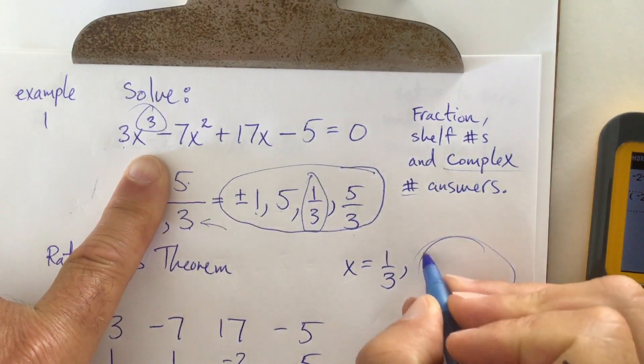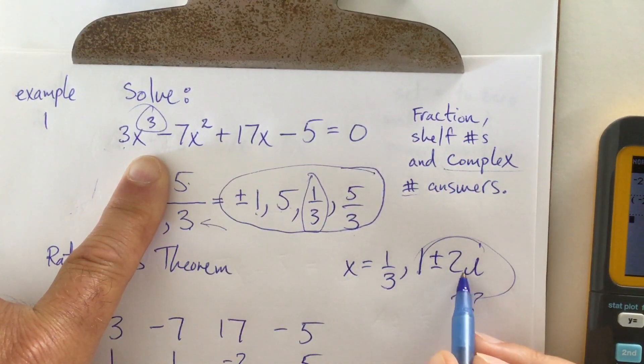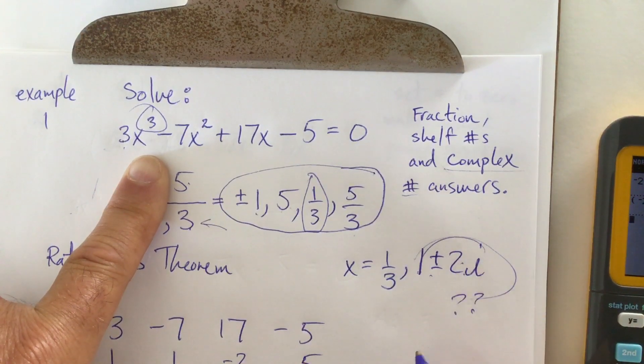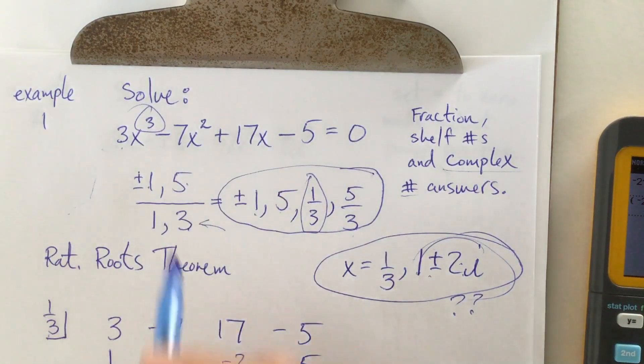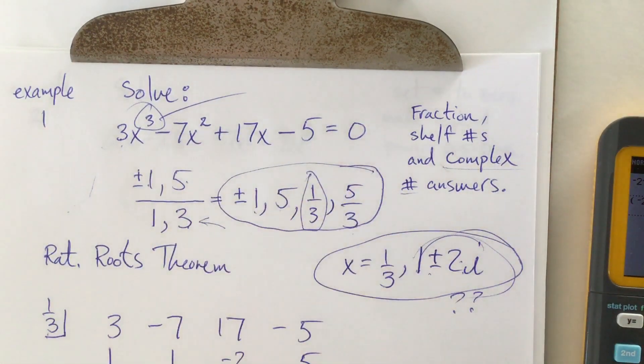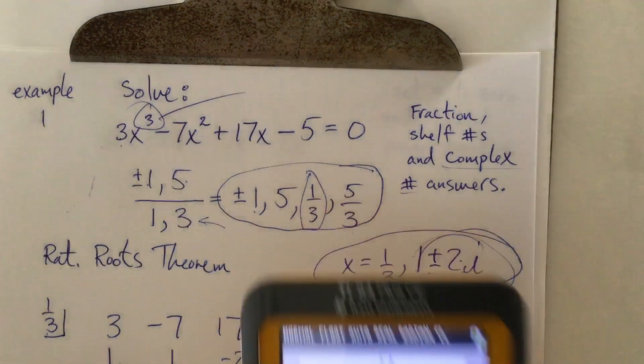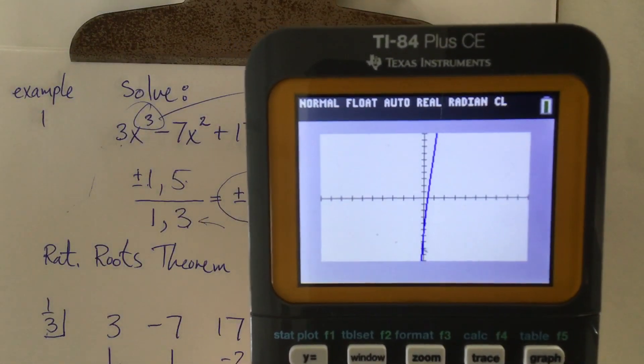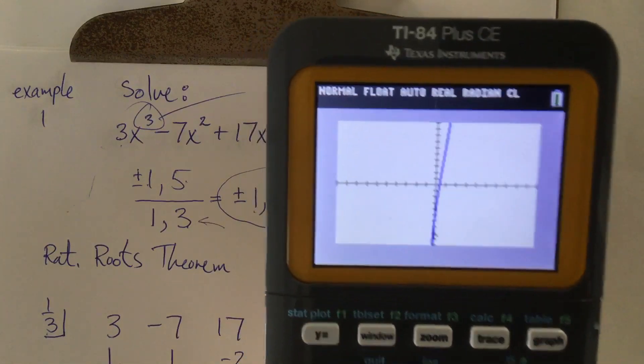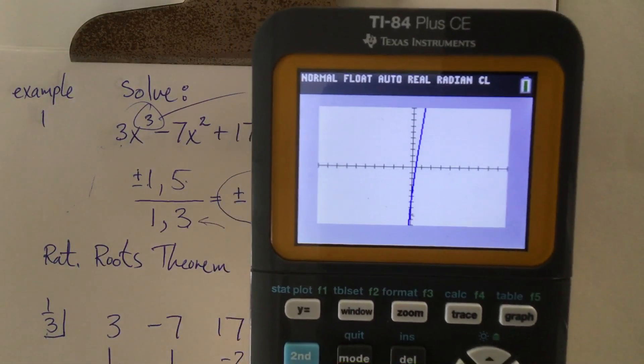These other two answers, 1 plus or minus 2i. 1 plus 2i is one of the answers. 1 minus 2i is the other one. Those make up my three solutions, because I'm supposed to have three solutions. But two of them happen to be complex. Now, how do you recognize that? Let's go back here. When you look at a graph, and you know there's supposed to be three points of intersection, and you only see one point of intersection, chances are you're going to have a complex solution in that question.